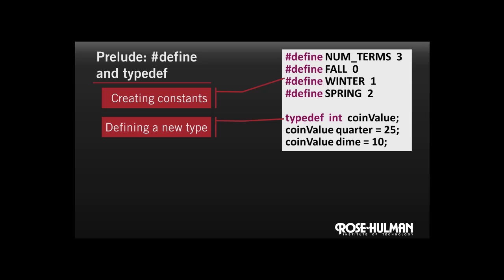Second, typedef allows us to give a new name to an existing type, so that we can refer to it by a more meaningful name in the rest of the program. In this example, we're dealing with coins, and we're defining coin_value to be an integer. Then when we use it, we can declare quarter to be of type coin_value, and then give it a value that is indeed an integer.